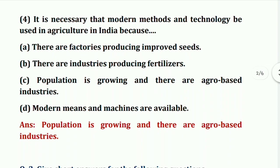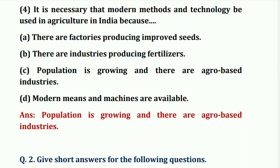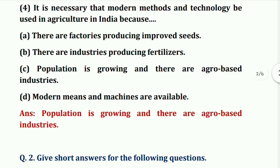Fourth question: it is necessary that modern methods and technology be used in agriculture in India because — the answer is: population is growing and there are agro-based industries, so it is important that people work in agro-based industries.